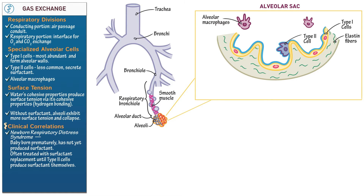Now let's illustrate how gas exchange occurs across the respiratory portion of the lungs. Note that diffusion describes the movement of solutes — in this case carbon dioxide and oxygen — along their concentration gradient. Thus, concentration gradients, which differ in the lungs and the peripheral tissues, determine the direction of diffusion.